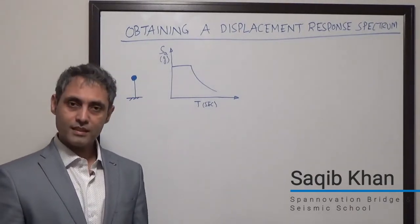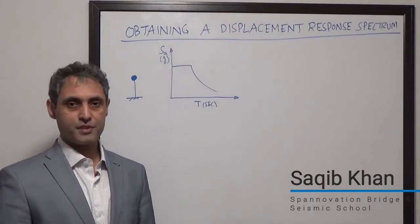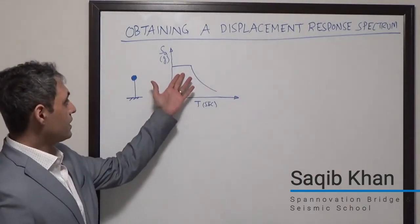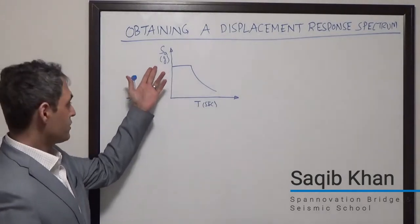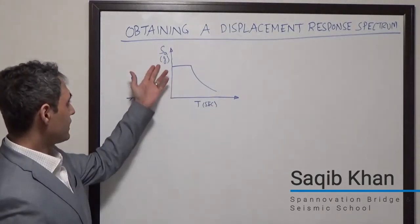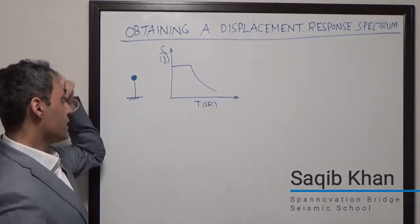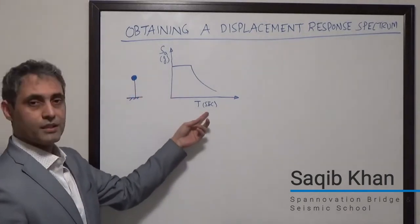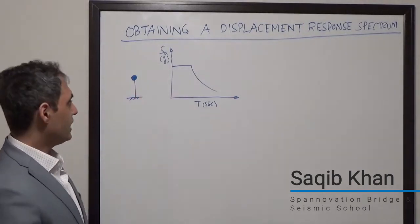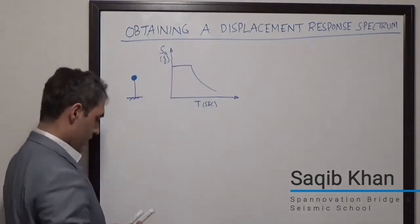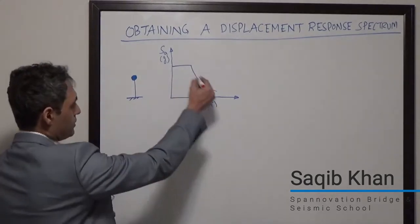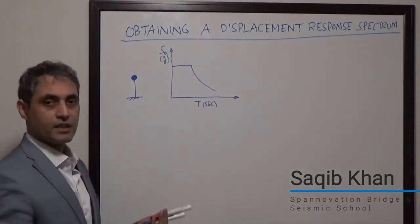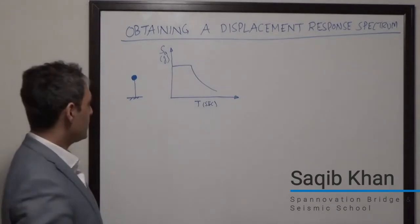The geotechnical engineers or the code-based procedures provide us with the smooth design spectrum for acceleration. On the vertical axis you have the spectral acceleration in terms of g, versus the period on the horizontal axis, and it usually has a plateau and then it drops off. That is the general shape of the acceleration response spectrum.